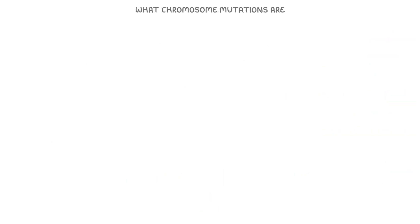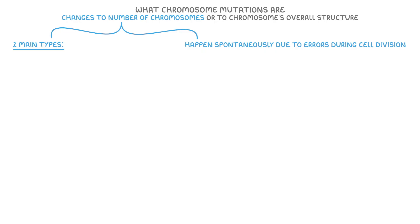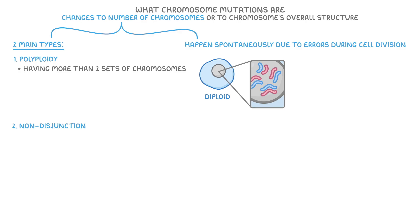Finally, let's cover chromosome mutations. We use the term chromosome mutations to describe changes to the number of chromosomes or to the chromosome's overall structure. In this video we'll focus on mutations that affect the number of chromosomes, and these can happen spontaneously due to errors during cell division. There are two main types: polyploidy and non-disjunction. Polyploidy refers to having more than two sets of chromosomes in body cells. Most animal cells are diploid — meaning two sets of each chromosome — but polyploidy mutations mean some organisms develop from zygotes with more than two sets of chromosomes.